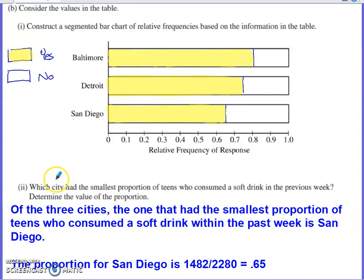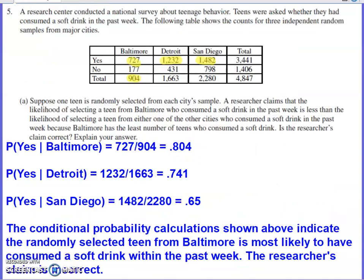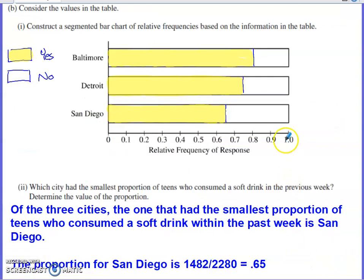The follow-up question asks which city had the smallest proportion of teens who consumed a soft drink within the previous week, and to determine the value of that proportion. San Diego clearly has the smallest proportion — that's obvious from the segmented bar chart as well. San Diego is the answer, and the value of the proportion was already determined back in Part A at 0.65, so we just transfer that calculation forward here.